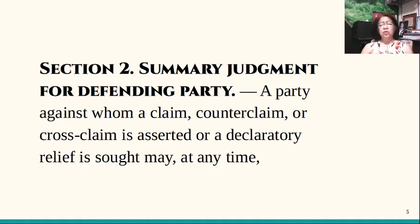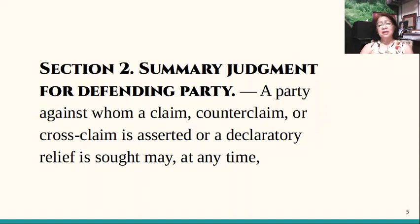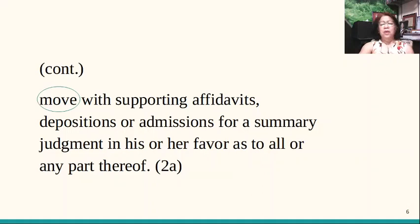Section 2 talks about summary judgment for the defending party. It says: 'A party against whom a claim, counterclaim, or crossclaim is asserted or a declaratory relief is sought may, at any time, move with supporting affidavits, depositions, or admissions for a summary judgment in his or her favor as to all or any part thereof.' Similar to summary judgment for the claimant, there has to be a motion. But the timetable is 'at any time' because the issues have already been joined — there is already a defendant or respondent — so there is no more need to wait for any answer.